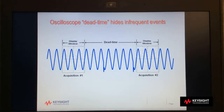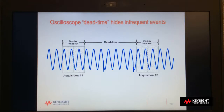Here we show an example of two acquisition cycles of an oscilloscope. Between each acquisition is oscilloscope dead time, sometimes called blind time. This is when the scope is not digitizing waveforms, but is processing the previously digitized waveform or perhaps making measurements.